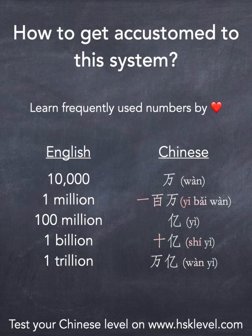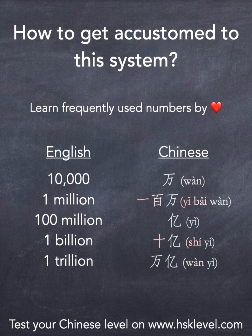This system is quite complicated, especially if you have to say a large number in conversation and start doing computations in your head — it's not going to feel natural. So my advice is to learn frequently used numbers by heart. Remember: ten thousand is wàn, one million is bǎi wàn, one hundred million is yì, one billion is shí yì, and one trillion is wàn yì.